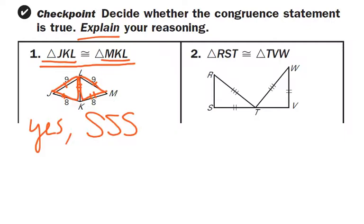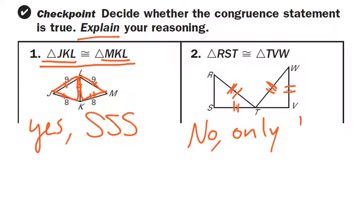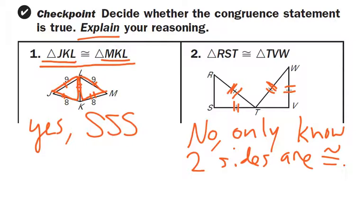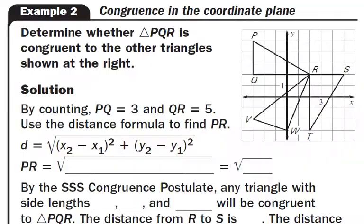For this next one, we know that segment ST and segment WV are congruent, and RT and TW are congruent — but that's only two sides. We need all three sides in order to say that the triangles are congruent, so the answer here is no. The reason is we only know two sides are congruent. If we also knew that segment RS and segment TV were congruent, then we'd have RST congruent to TVW by Side-Side-Side — but based on what's given, no, they only have two sides.